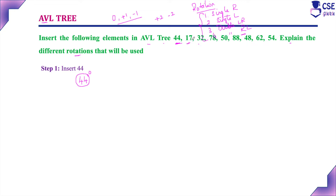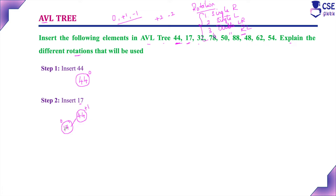Step 2: insert the next element, 17. Compare it with the root node 44. Since 17 is lesser than 44, insert it as a left child. Check the balance factor: for the leaf node it is 0, and for node 44, number of left children is 1 minus number of right children is 0, so balance factor is +1. This is a balanced AVL tree — no rotation needed.